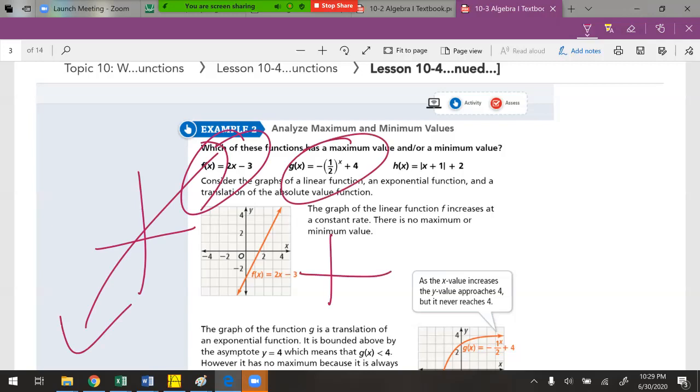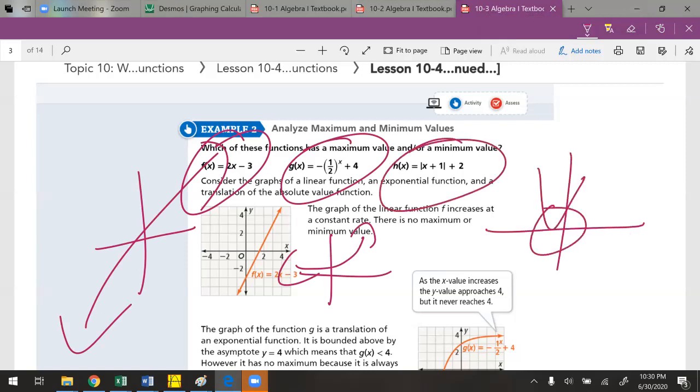This right here is exponential, like that. This is not going to give you a min or a maximum, and the reason why it's not going to give you a minimum is because notice how it's going to continue forever and ever to the left. It never shows a peak. This one does because it's absolute value. Keep that in mind for sure.